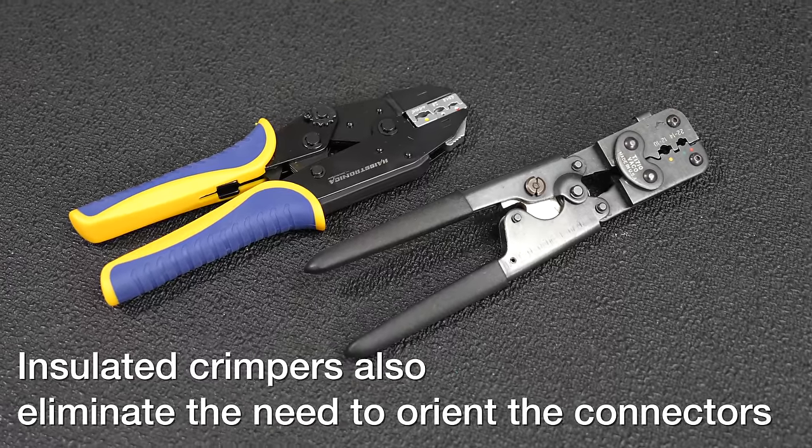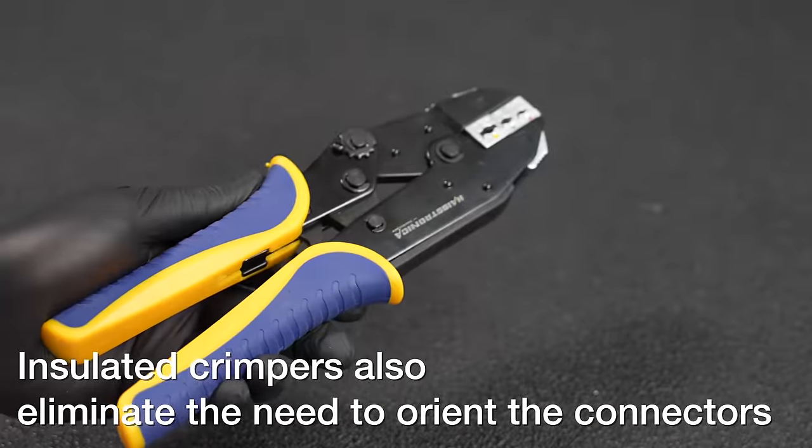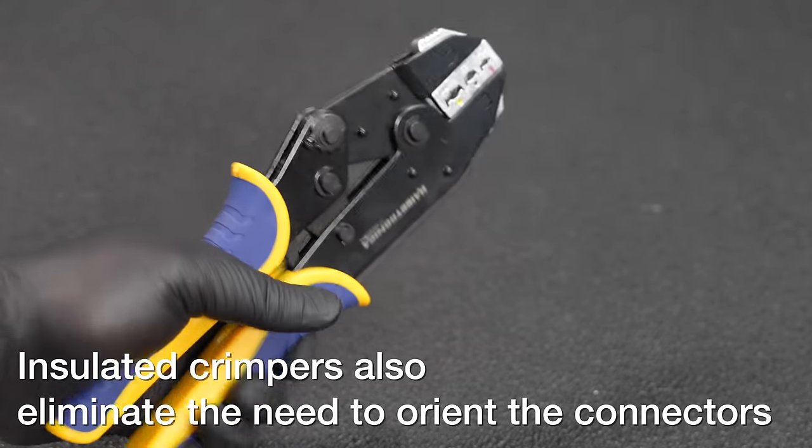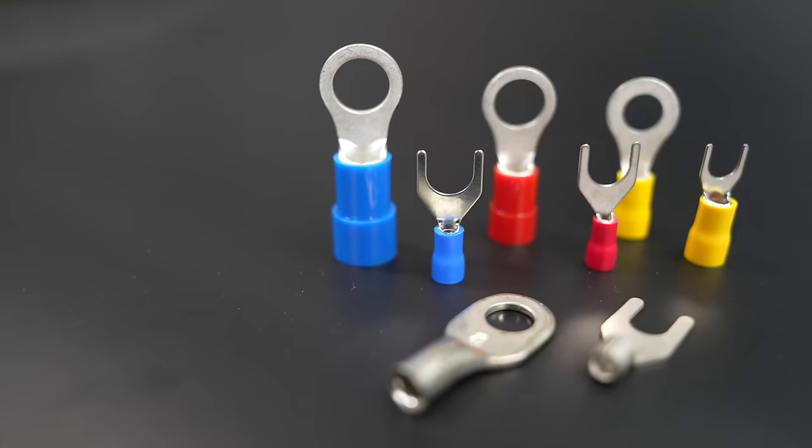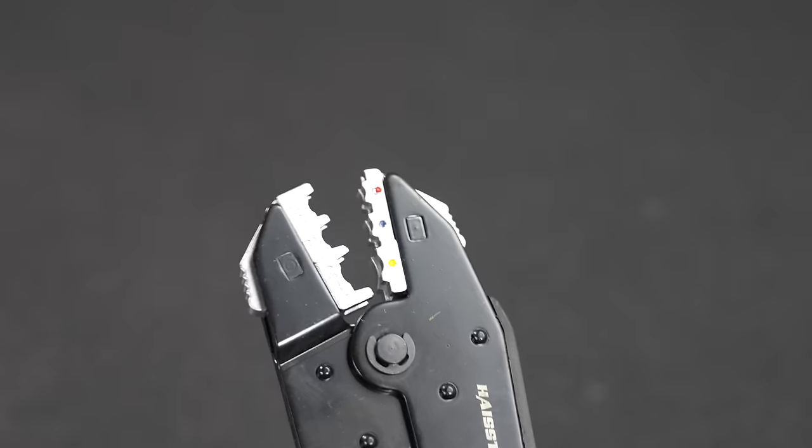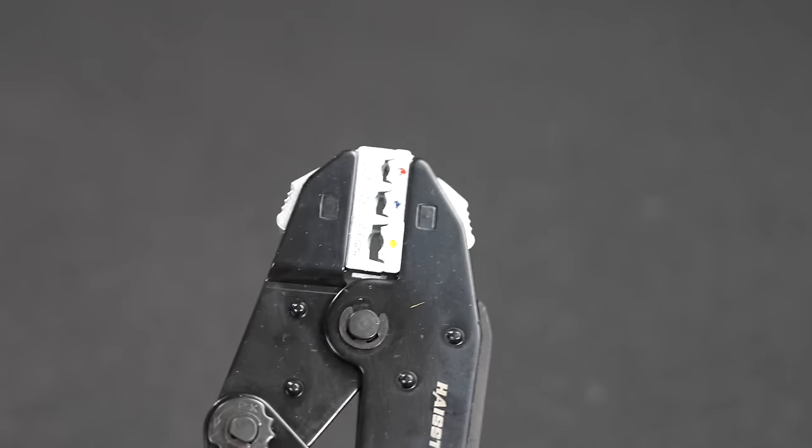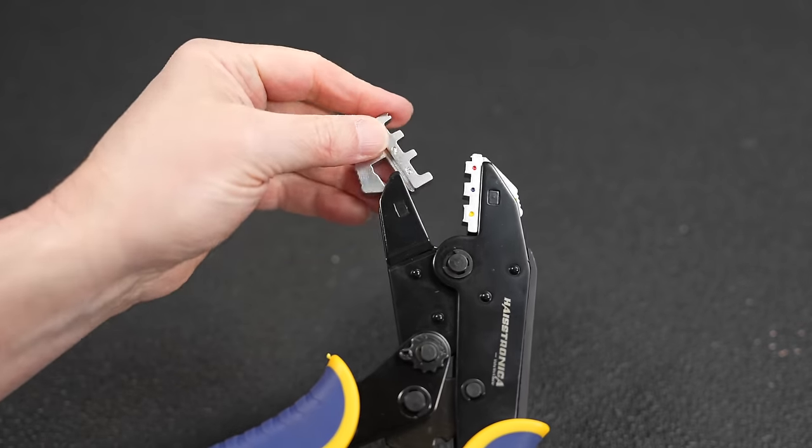But what about these ratcheting crimpers? Are they really better? Well, the short answer is if you're going to use insulated connectors, they absolutely are. Now the one here costs just about 25 bucks and it is an interchangeable head. You can use this for insulated, uninsulated versions, and many other types of connectors.